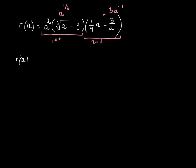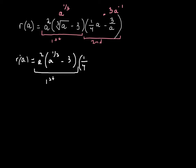Now I'm going to start. The derivative, r prime of a, is going to be my first — so that whole thing I've represented as my first, I'm just going to rewrite: a squared, a to the one-third power minus three — that whole piece is my first — times the derivative of my second. The derivative of one-fourth a is simply one-fourth. The derivative of negative three a to the negative one: when I multiply negative one times negative three, I get positive three a to the negative two. So there's the first and the derivative of the second.